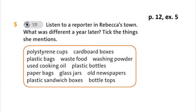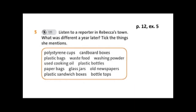И последняя часть аудирования — мы послушаем её же репортаж через год после событий предыдущего текста. Послушайте что изменилось — what was different a year later? В данной табличке написаны различные словосочетания, большинство из них вам известны. По мере прослушивания подчеркиваете те вещи о которых она говорит. Трак 1.11, Unit 1 Vocabulary and Listening, Exercise 5.